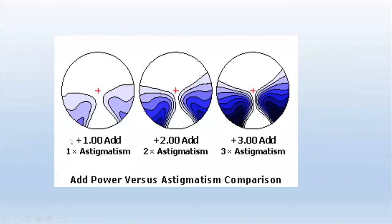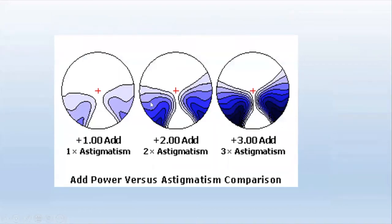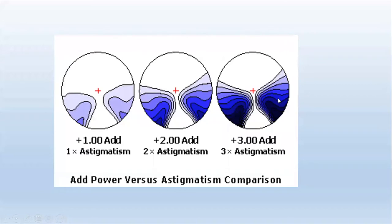The same principle applies when comparing low adds with low astigmatism versus higher adds. With a low add and, for example, one diopter of astigmatism, that is what your peripheral distortion looks like on the edges. Compared to a higher add with twice as much astigmatism, and then a three-add with three times astigmatism — all of this affects the corridor and peripheral distortions.